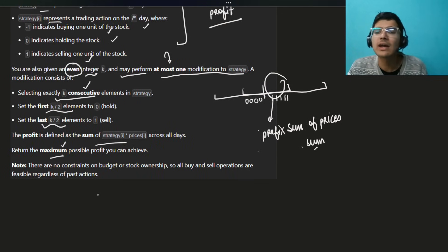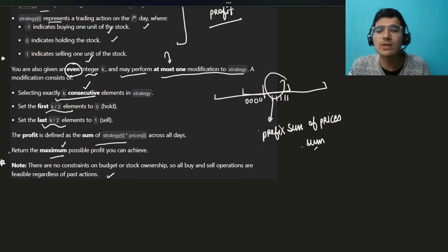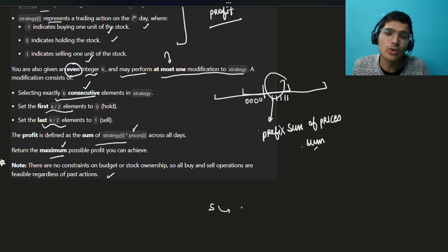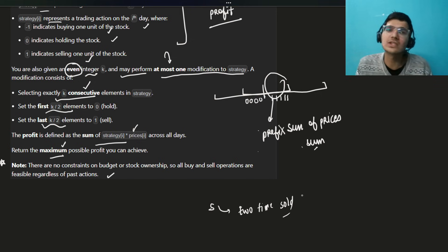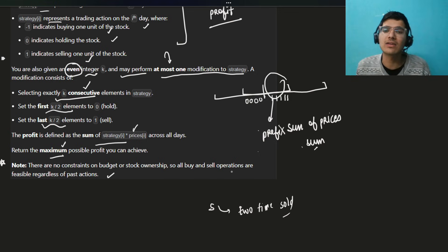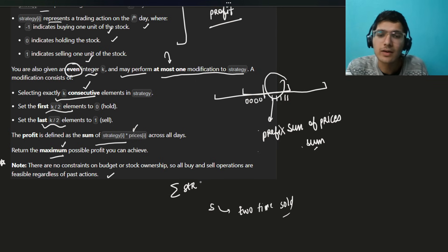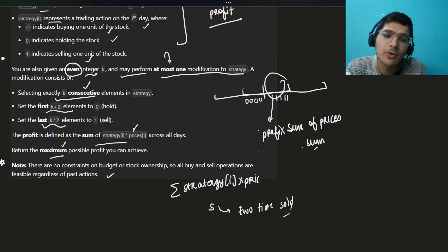There is no constraint on budget — that is very important. This is not really a traditional stock market problem. You don't need to worry about buying and selling constraints. Just consider everything: multiply strategy[i] by prices[i] and sum it. That summation — strategy[i] times prices[i] — is the most important thing you have to compute.